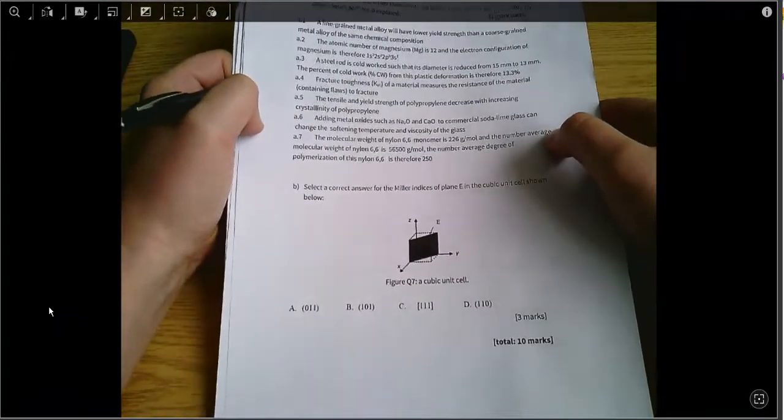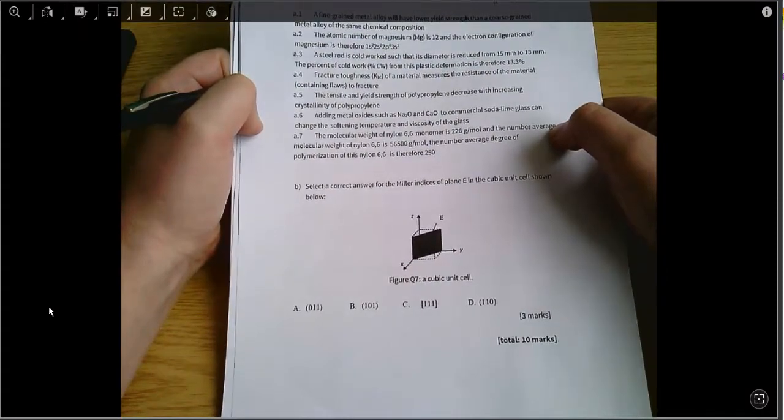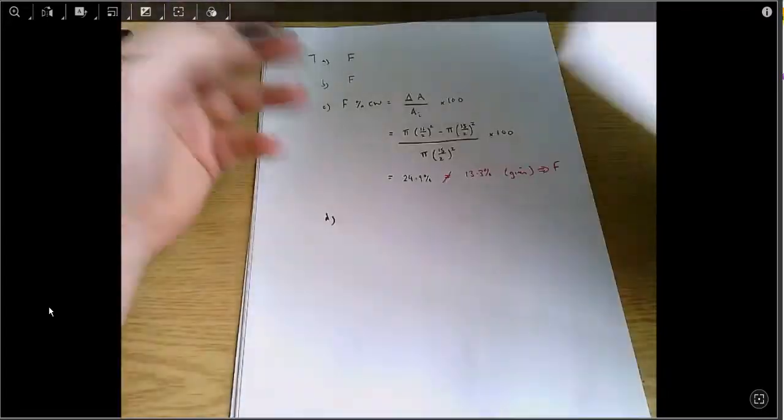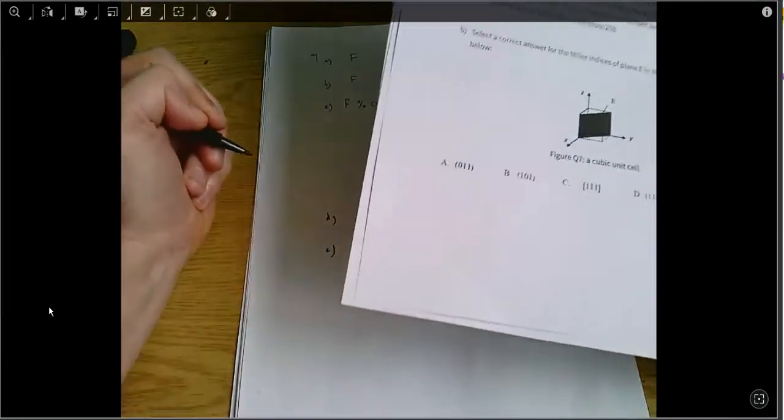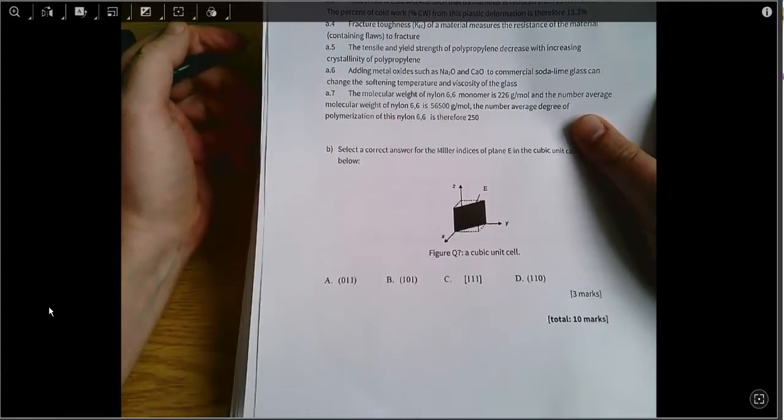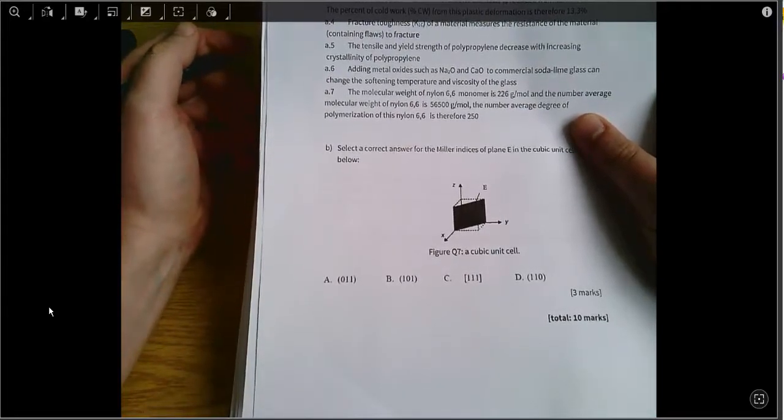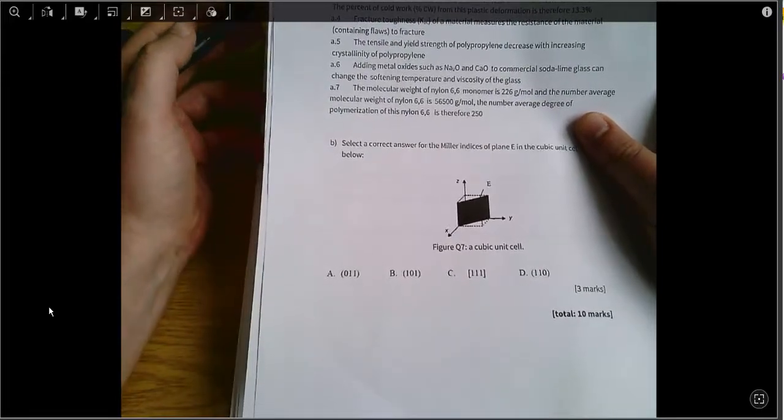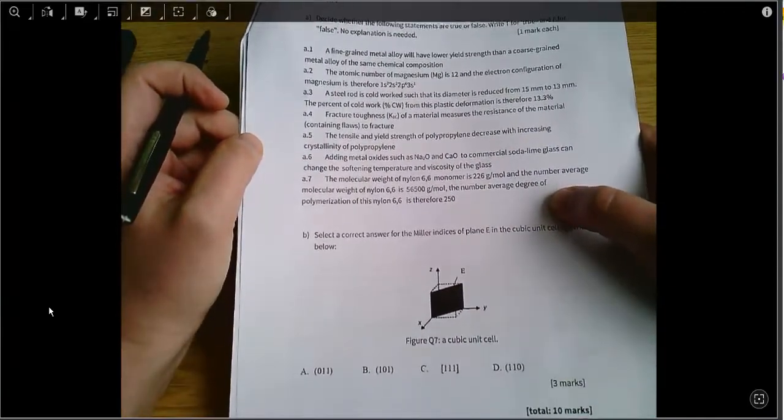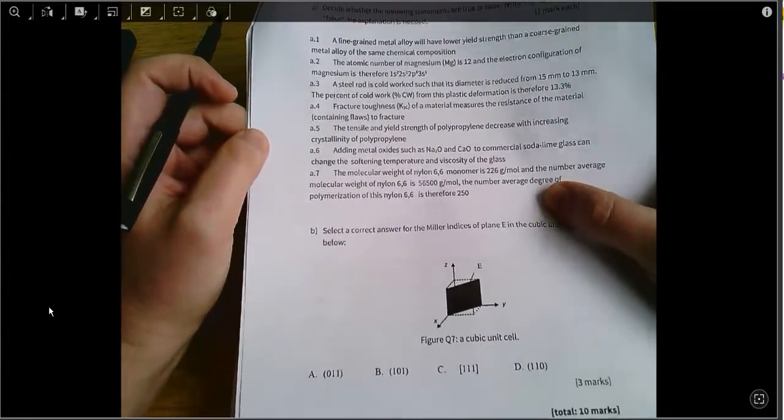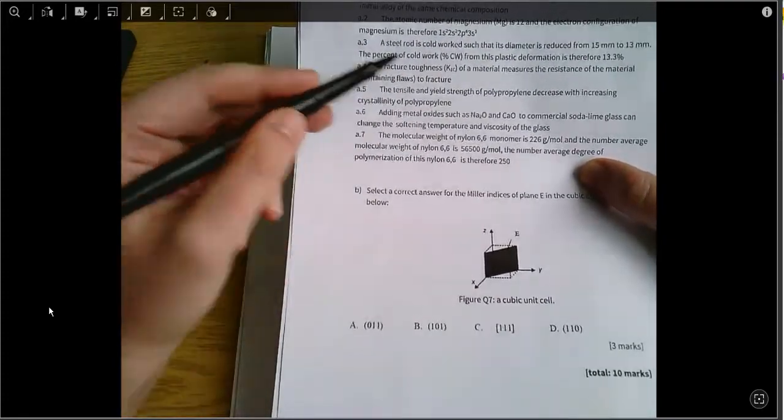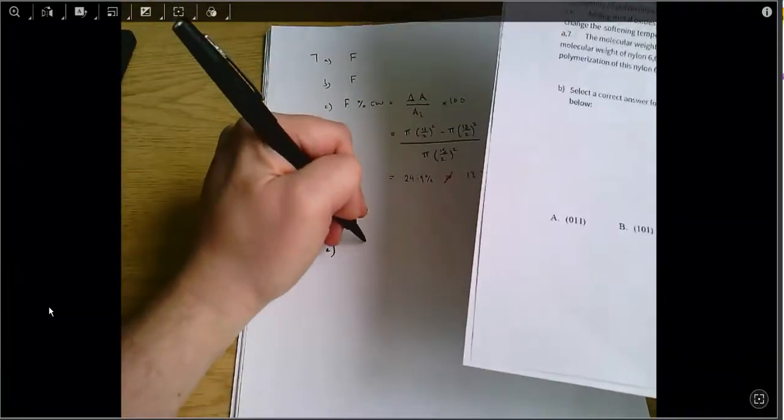Part 4, the fracture toughness of a material measures the resistance of the material to fracture. Well that's just true, that is what the fracture toughness is measuring. The tensile strength and yield strength decrease with increasing crystallinity of polypropylene. This is a bit like the first part of the question, because higher crystallinity leads to harder, stiffer and less ductile materials, and so that means essentially the tensile and yield strength are increasing with crystallinity, so that is false.